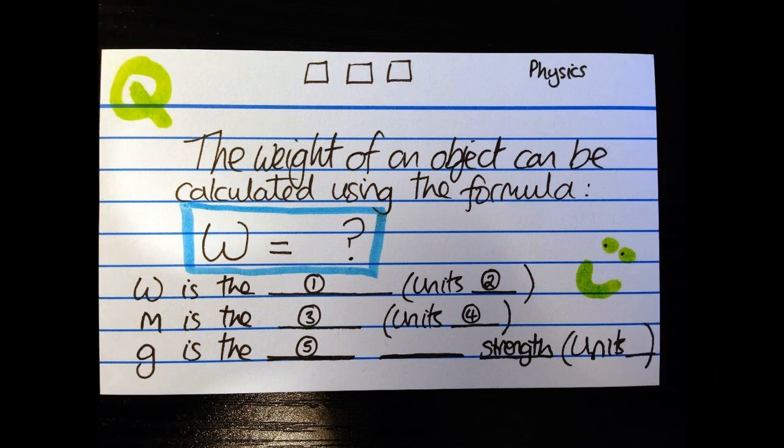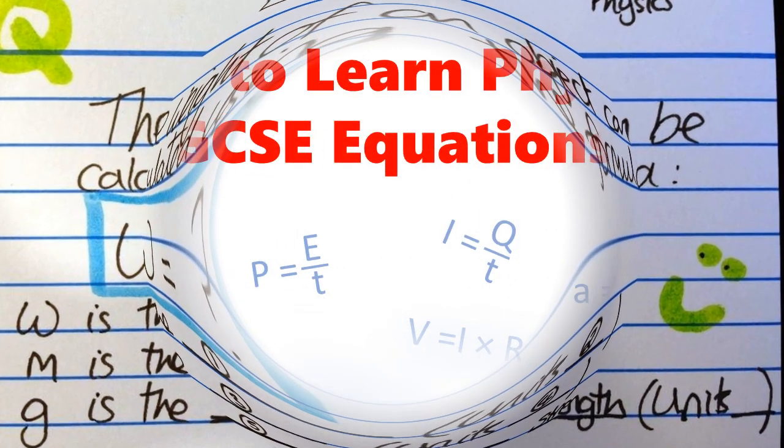Thirdly, if you answer a flashcard correctly, give yourself a tick. Your aim is to get three ticks on a flashcard, and that will mean that you've learned the equation.